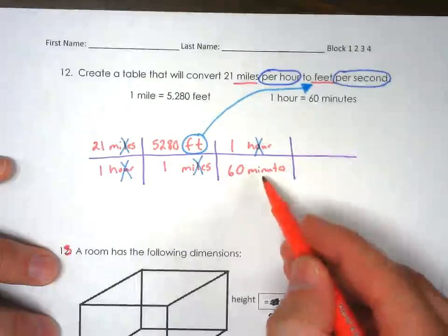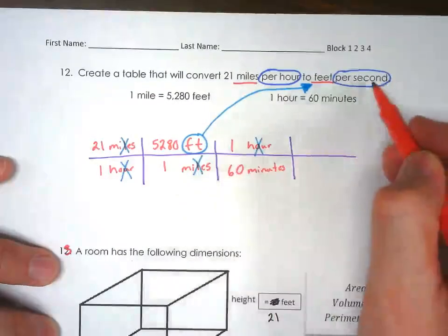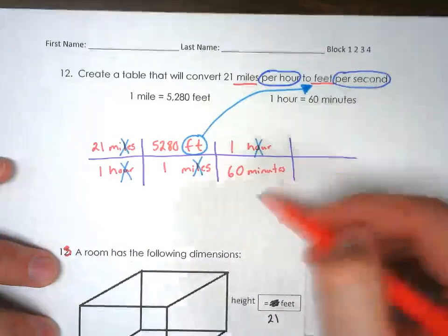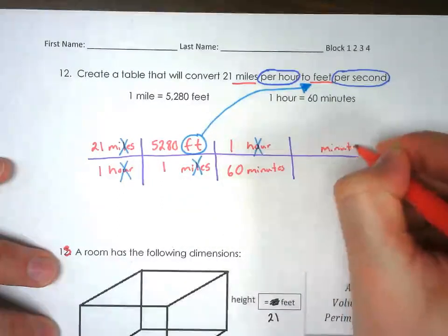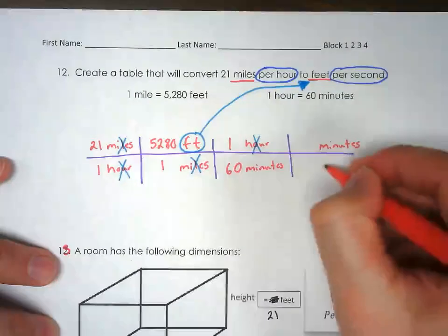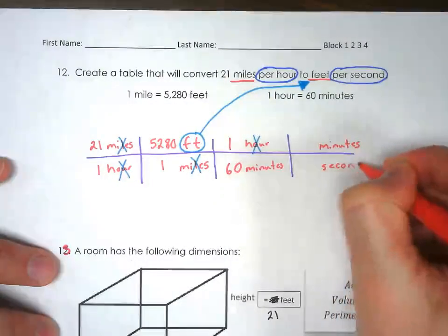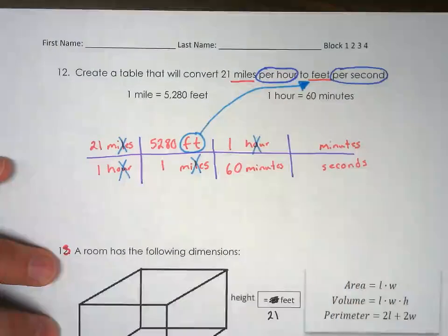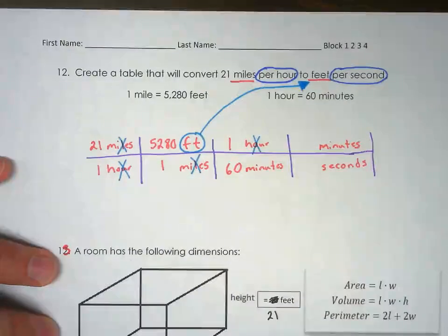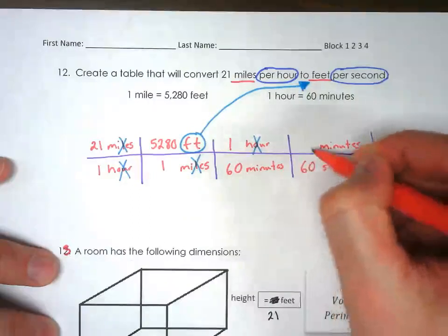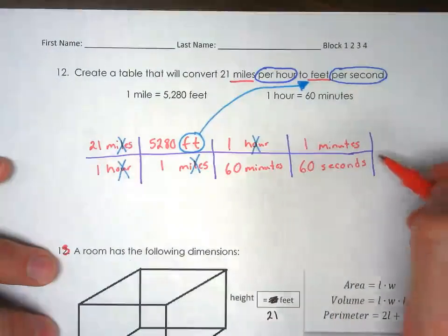Were we looking for minutes? No, we're looking for seconds. So we need to figure out how many seconds are in a minute. If minutes was here, let's put minutes at the top. We're trying to go to seconds, and you should know this. How many seconds are in a minute? There are 60 seconds in one minute. Perfect.